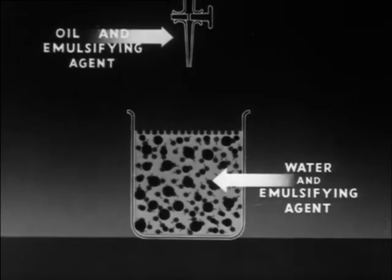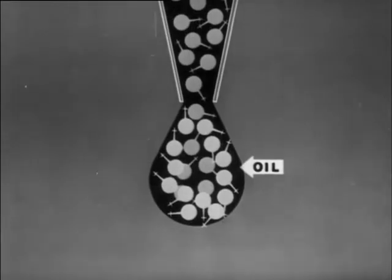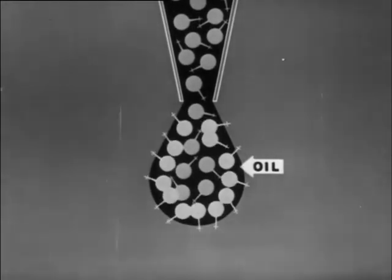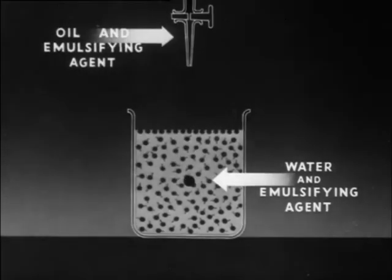Stability of emulsions may sometimes be increased by dissolving emulsifying agents separately in the oil and the water and thus getting a double locking action. In addition, they form a membrane surrounding the globules, hindering their coalescence.